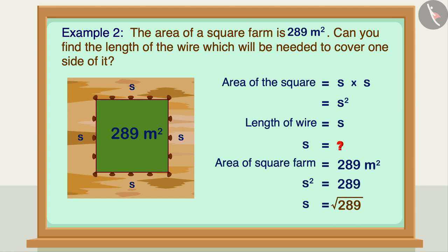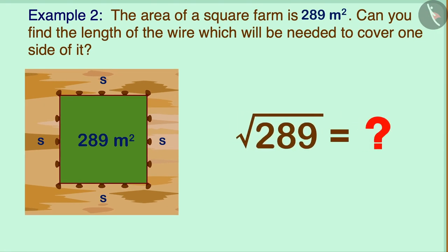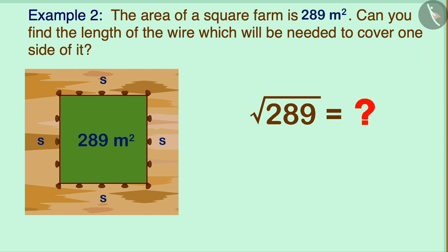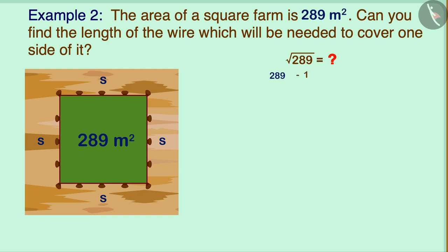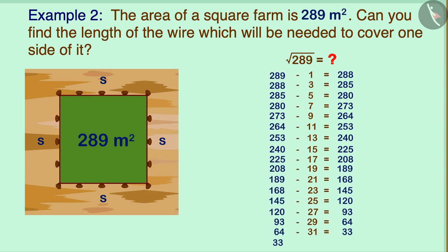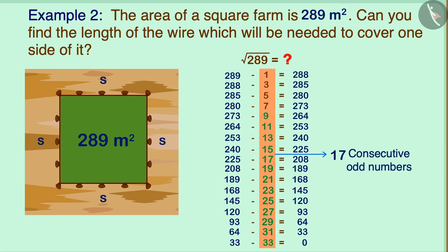To find the square root of 289, we start subtracting consecutive odd numbers: 289 minus 1 equals 288, then 288 minus 3 equals 285, and so on. At the end, 33 minus 33 gives zero. We reach zero by subtracting 17 consecutive odd numbers, therefore the square root of 289 is 17.